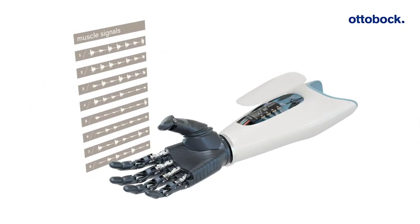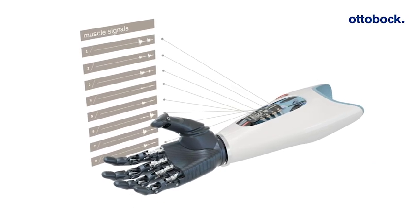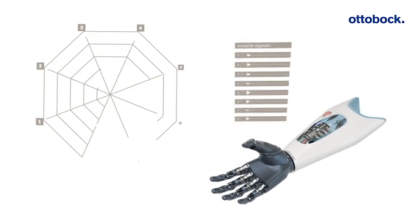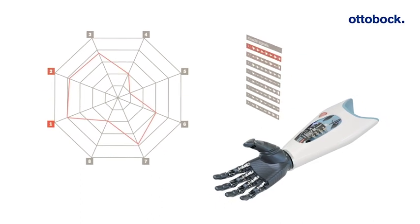Complex mathematical algorithms transform and amplify these signals and patterns so that a prosthetic hand can translate them into the corresponding movement.